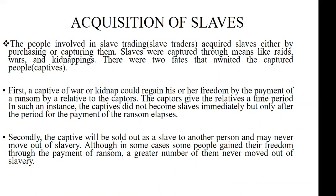These slave raiders used methods like raids or wars. When they waged war on a certain society or group of people, they captured the people, made them captives, and then sold them to the Europeans as slaves. Some of them also went into the forest and kidnapped people and brought them to their areas to be sold as slaves. They could also raid on a particular community and whoever fell in their hands was captured and later sold as a slave.